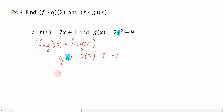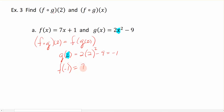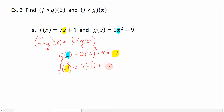Now we start over, only this time I'm going to evaluate f at negative 1. So my f of x function, which is 7 times x — or negative 1 — plus 1. The negative 1 that was the result of this evaluation is now being evaluated in my f of x function. So negative 7 plus 1 is negative 6.